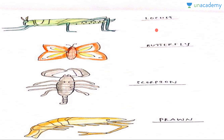We also have the butterfly, very commonly known; the scorpion, belonging to Arachnida; and the prawn, which belongs to Crustacea. That's all for Arthropoda — that's all you need to know. Stay tuned for more lessons, thank you!